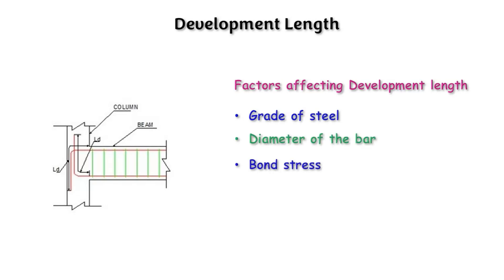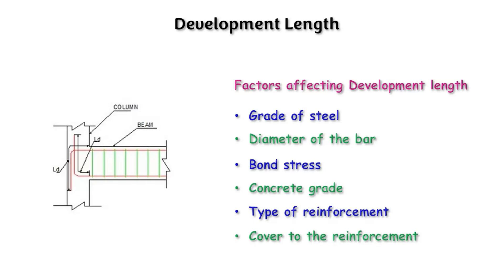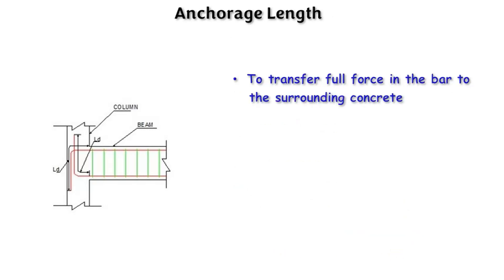The factors affecting development length are: grade of steel, diameter of the bar, bond stress, concrete grade, type of reinforcement, and cover to the reinforcement. The grade of steel can be Fe 415 or Fe 500. Bar diameters range from 8 mm to 32 mm. Bond stress depends on the grade of concrete, and the type of reinforcement refers to whether it is a plain bar or a deformed bar.